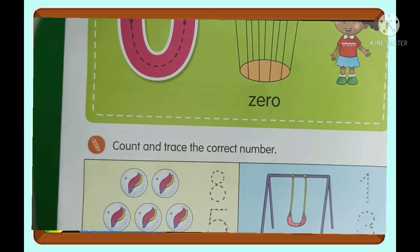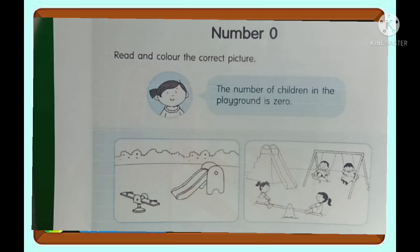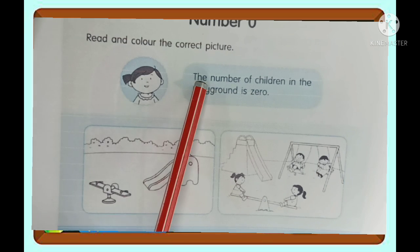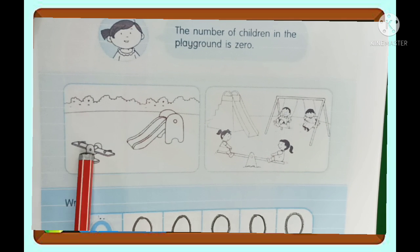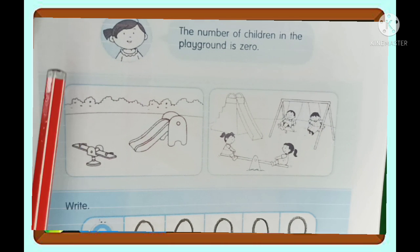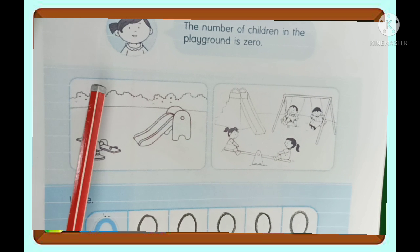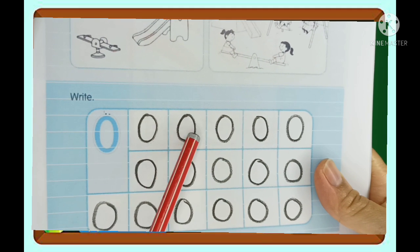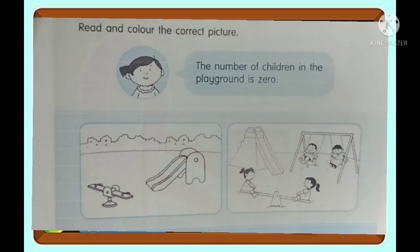And now we are going to go for our worksheet, page 31 — number zero. Let's start here. Read and color the correct picture. The number of children in the playground is zero. So which of these is zero — no children in the playground? This number one or number two? We're going to color this picture — color picture number one. And down here, we are going to write zero, like this and like that. That's all for our zero activity.